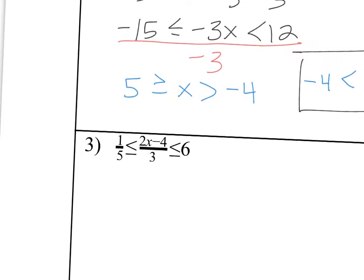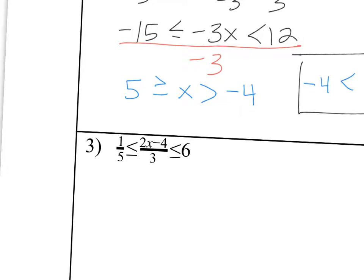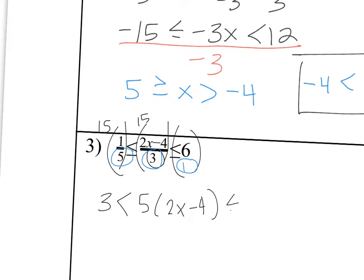And then number 3, you could clear fractions if you want. So I'm going to multiply all 3 parts by 15 to get rid of the denominator. That's the least common multiple of all the denominators. So I'm going to lose the fraction right here. So it's going to be 15 divided by 5, which is 3, is less than, if I multiply this by 15, I'm going to be left with 5 times 2x minus 4. And 15 times 6 is 90.